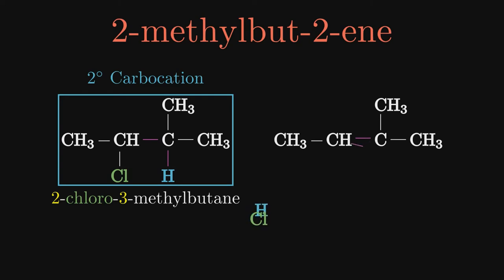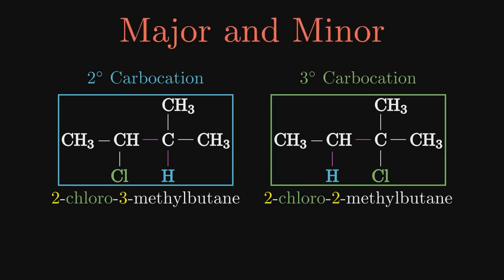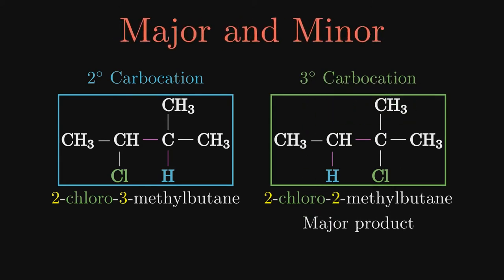If we switch it around and add hydrogen to the left sp2 carbon, we get a tertiary carbocation. The chlorine then adds to the other carbon and we get 2-chloro-2-methyl-butane as the product. The tertiary carbocation being more stable and forming more often results in this being the major product. We would consider the 2-chloro-3-methyl-butane as a minor product if it even forms at all.